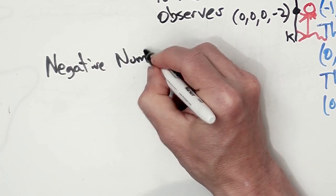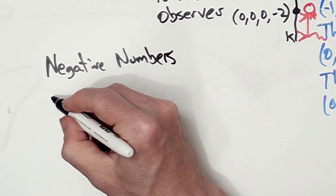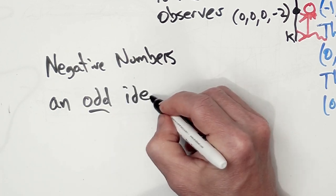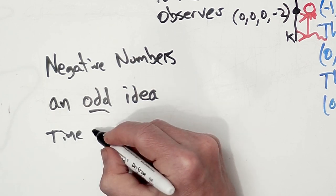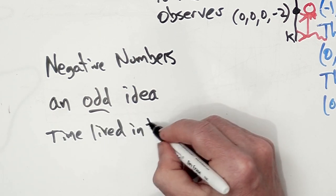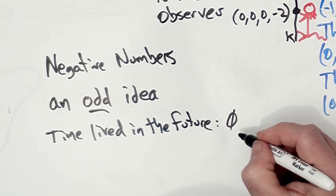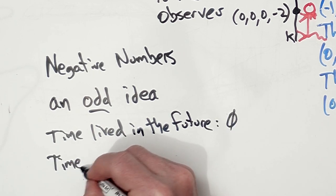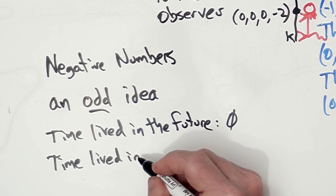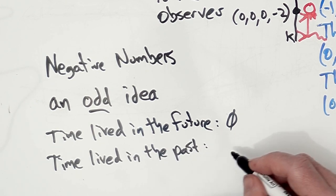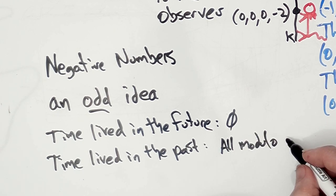Now, negative numbers are actually a deeply odd idea. Remember, we had to import that from India through the Middle East. And the time that is lived in the future, oh actually, no time is lived in the future. But the time lived in the past, well, it's your entire life modulo now.